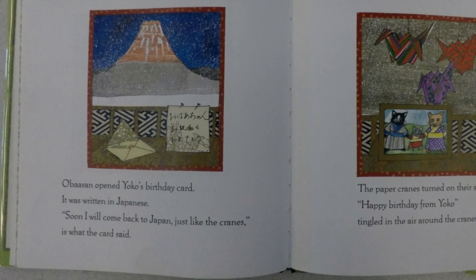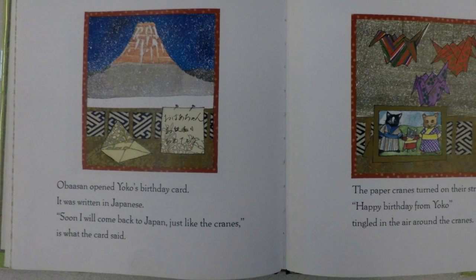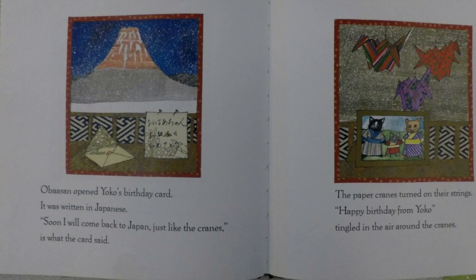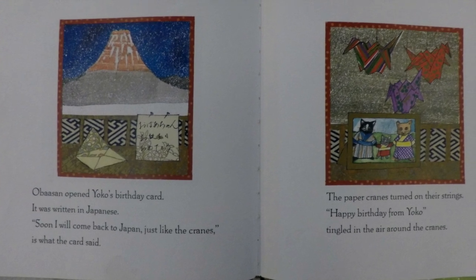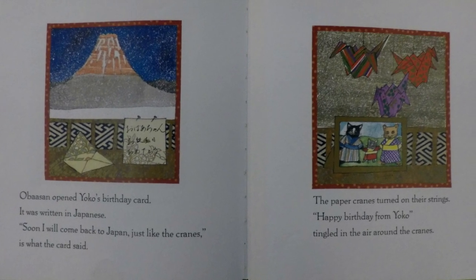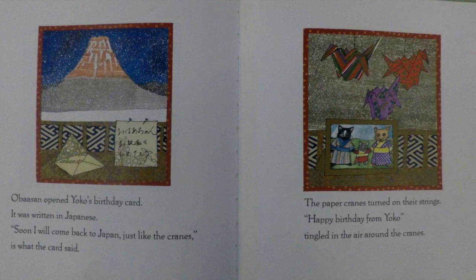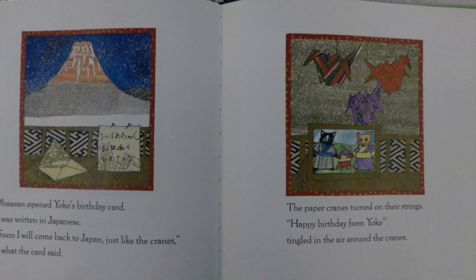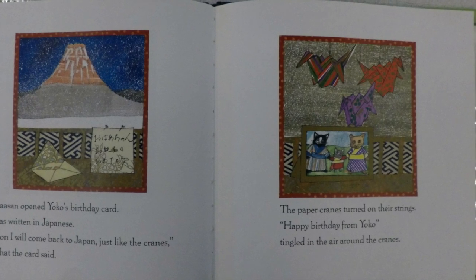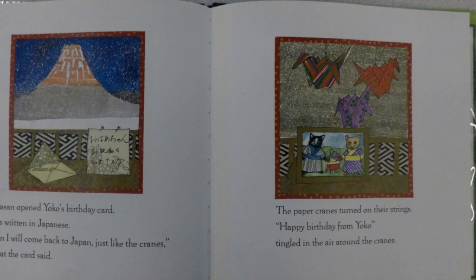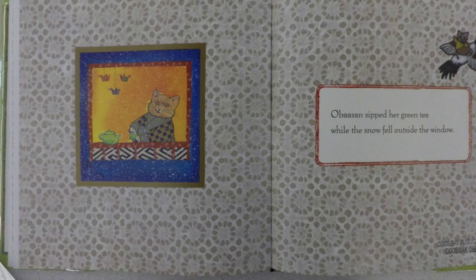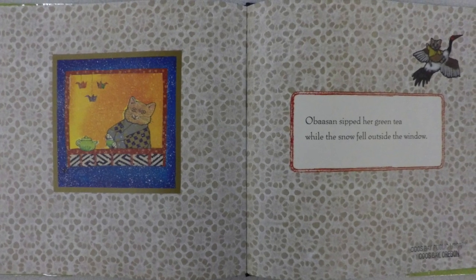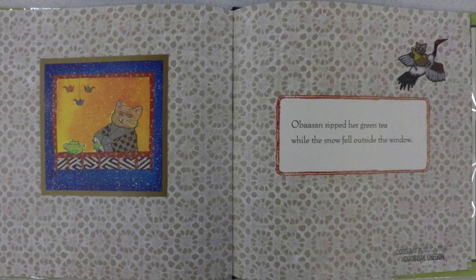Obasan opened Yoko's birthday card. It was written in Japanese. Soon I will come back to Japan just like the cranes is what the card said. The paper cranes turned on their strings. Happy birthday from Yoko tingled in the air around the cranes. Obasan sipped her green tea while the snow fell outside the window.